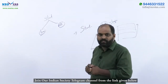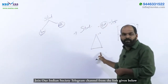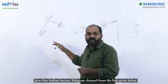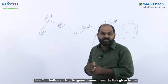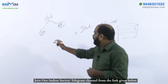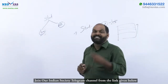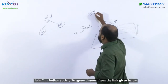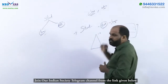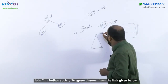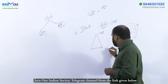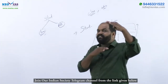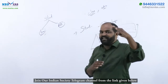Stratification can be of two types: one is hierarchical, and the other is differentiation. In hierarchy, society or social groups are divided into vertical layers. Class is a good example of that, and caste is a good example of that as well.